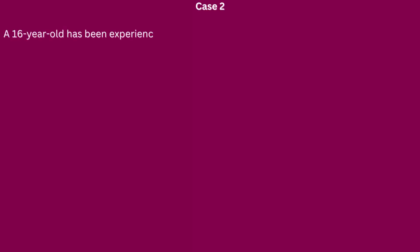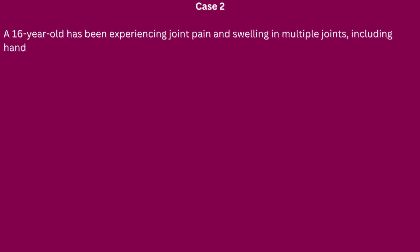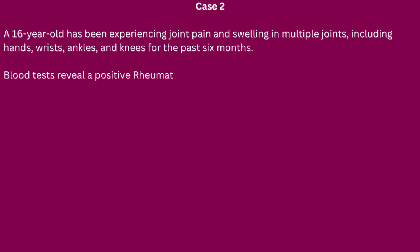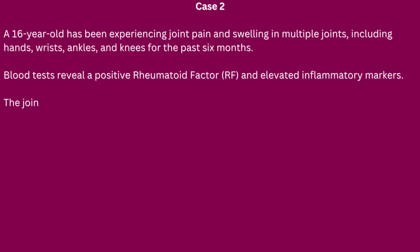Case 2. A 16-year-old has been experiencing joint pain and swelling in multiple joints, including hands, wrists, ankles, and knees, for the past six months. Blood tests reveal a positive rheumatoid factor and elevated inflammatory markers. The joint pain is symmetric and more severe in the morning.